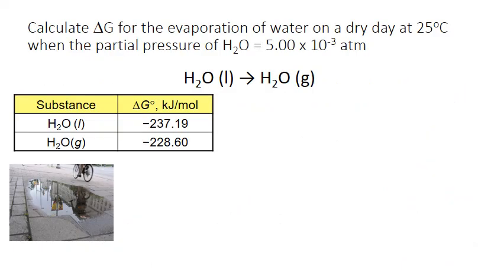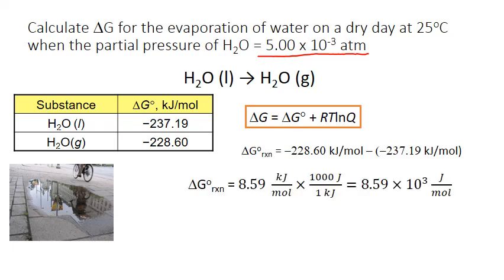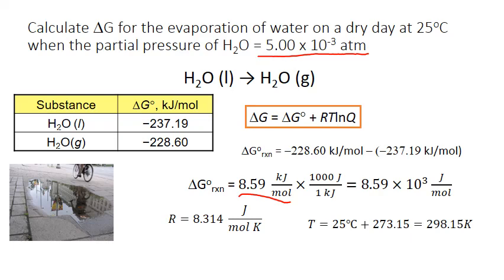Let's look at the evaporation of water again, this time factoring in the actual vapor pressure of water on a dry day: 5.00 times 10 to the negative 3 atmospheres. The Gibbs free energy change will be the standard value we calculated from reference values — positive 8.59 kilojoules per mole — plus R times T times the natural log of Q. We need to convert this into joules per mole to match the units in the gas constant R, and also convert our temperature into Kelvin.